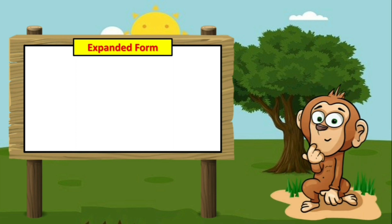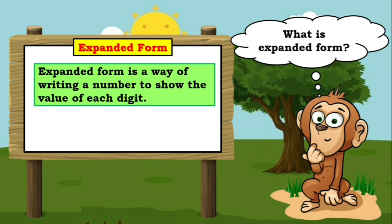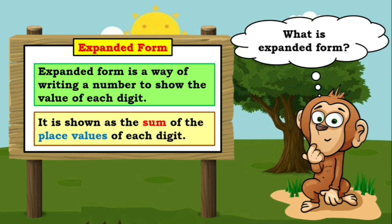So, children, the first question that comes to our mind: what is expanded form? Expanded form is a way of writing a number to show the value of each digit, or we can say it is shown as the sum of the place value of each digit.